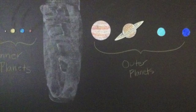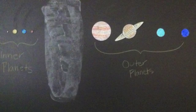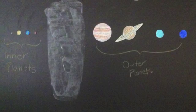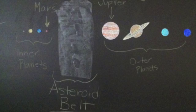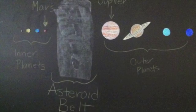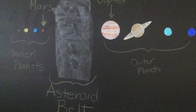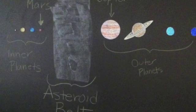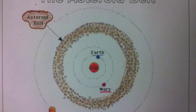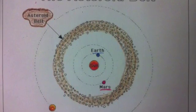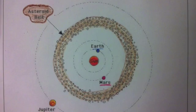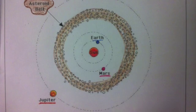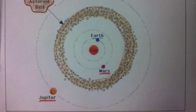There is a region that separates the inner and outer planets from each other. This region is called the asteroid belt. Asteroids are chunks of rock and metal that orbit the sun. As you can see here, the asteroid belt is located between Mars, the last inner planet, and Jupiter, the first outer planet.